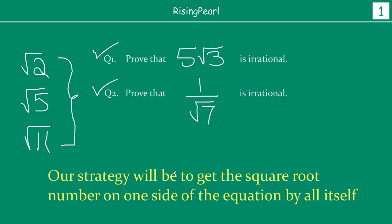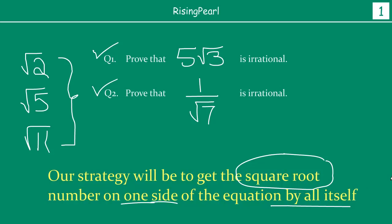Our strategy will be to get the square root number on one side of the equation all by itself. This is going to be our strategy as we go ahead and prove it. You may be wondering what I mean by that, and you will see that in just a minute.